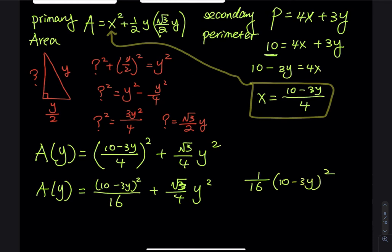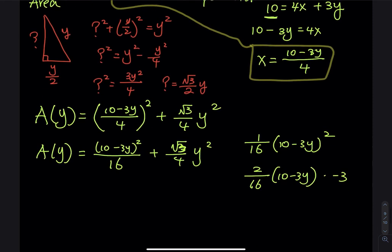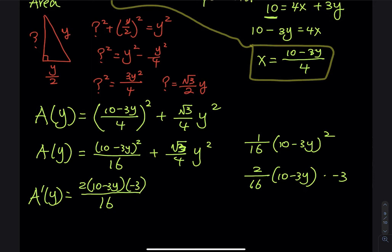Taking the derivative, A′(y) = [2(10 − 3y)(−3)] / 16 + (√3/2) · y. Set the whole thing equal to 0 and solve for y.